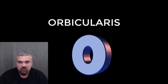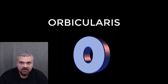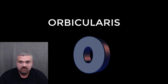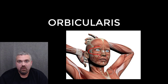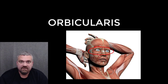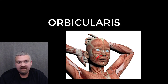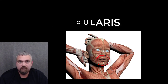The term orbicularis means circle, so a circular or sphincter muscle is an orbicularis muscle. The orbicularis oculi is the circular muscle that surrounds each eye, and the orbicularis oris is the circular muscle that surrounds your mouth.